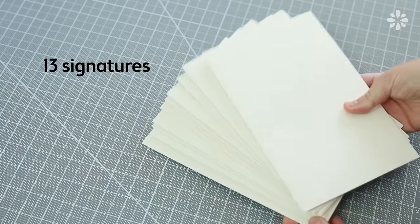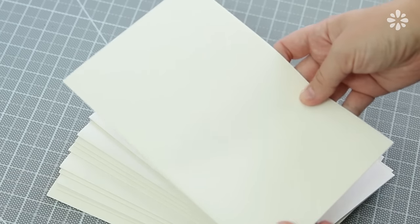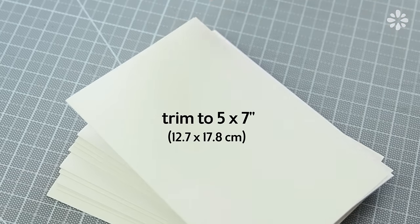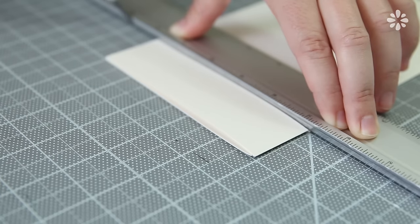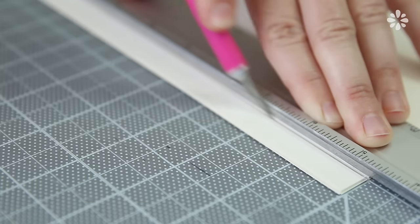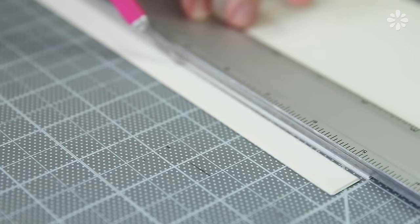You can also add more pages if you want a larger book. The diary in the show looks a little smaller than this page size, so I'm going to trim all of these signatures to five by seven inches. I'm trimming one and a half inch from the top and a half inch from the edge of each signature.